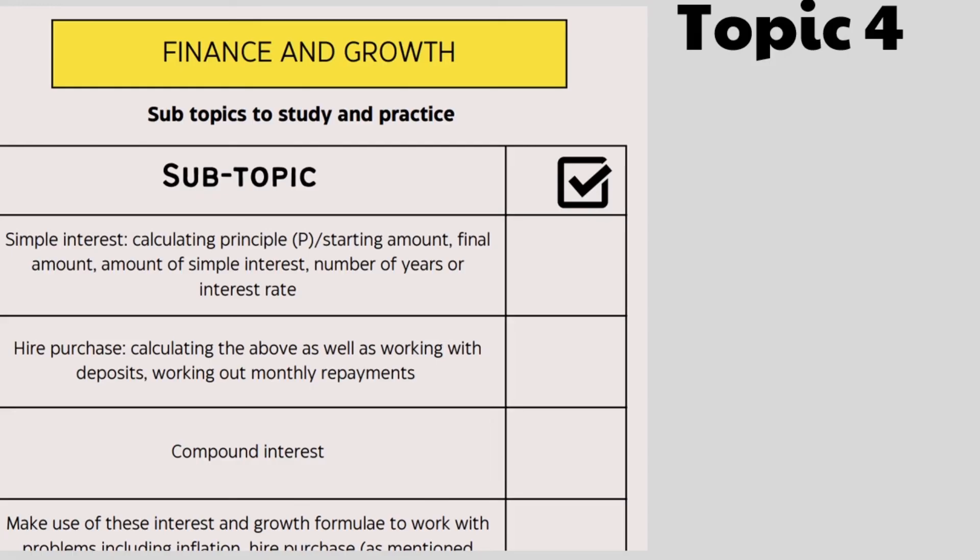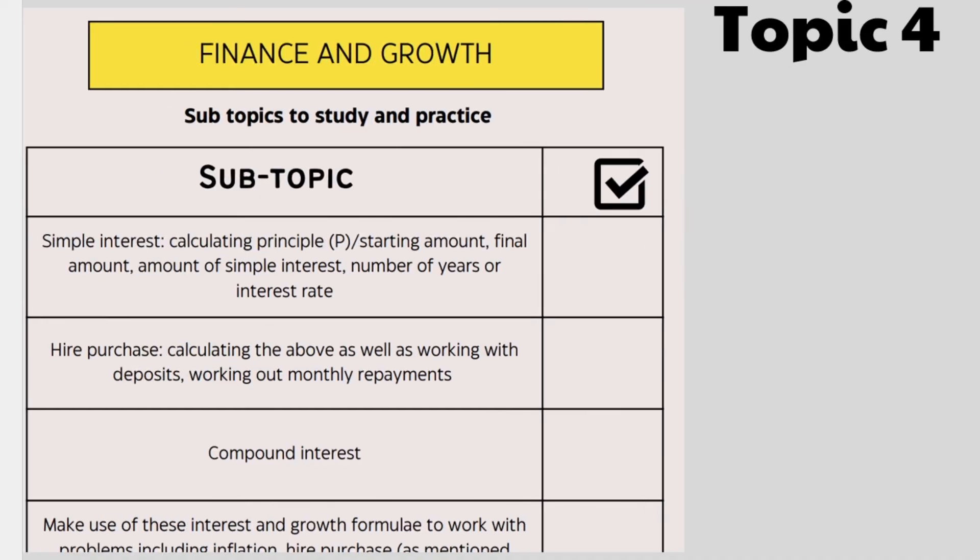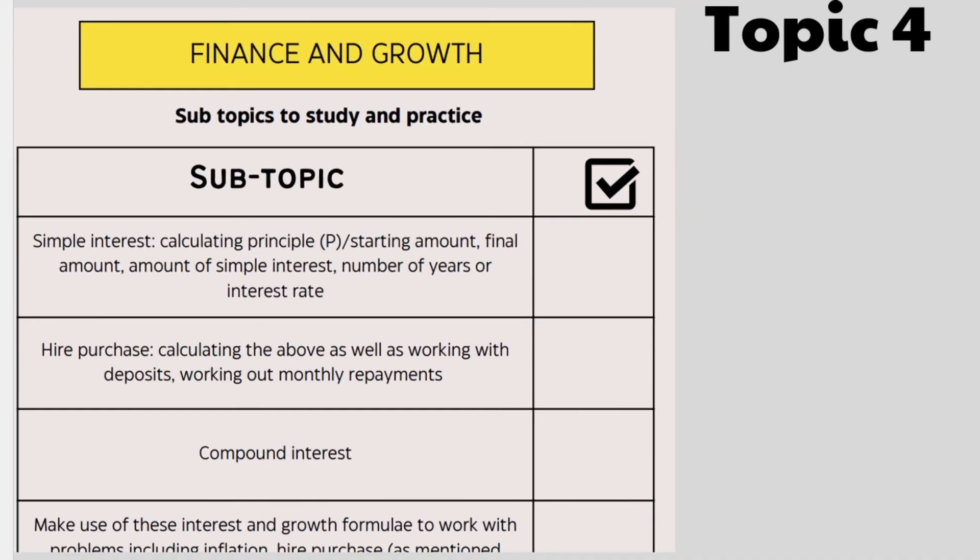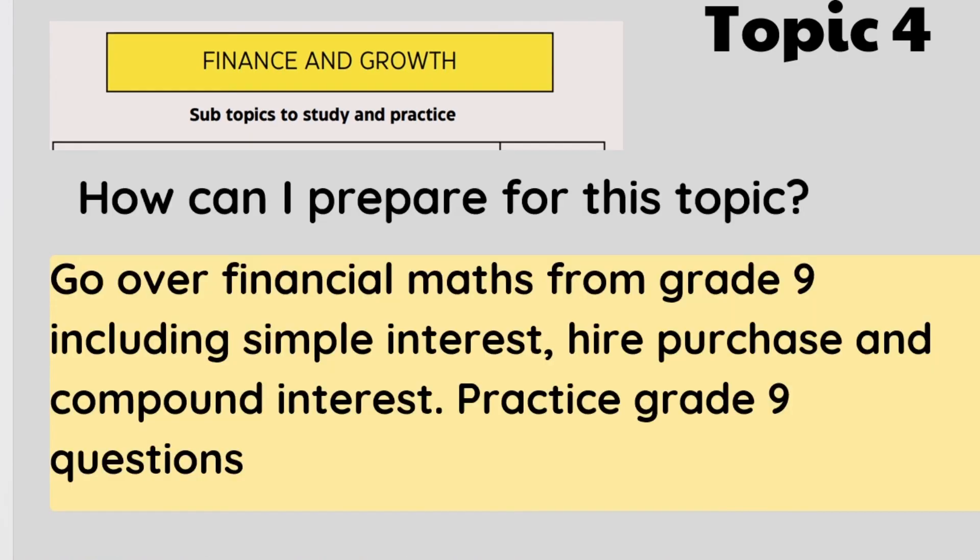Then topic 4 is finance and growth. That is what they call the topic in the ATPs. Basically, it's financial maths. How can you prepare for this topic? Go over all the financial maths from grade 8 and grade 9, including simple interest, how to calculate simple interest, how to calculate your final amount, how to calculate your principal amount, hire purchase if you did that in grade 9, which you should have, compound interest, and practice grade 9 questions.